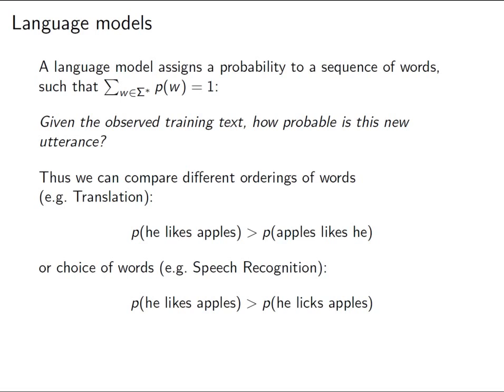The idea behind language modelling is very simple. We want to build a probabilistic model that assigns probabilities to utterances. An utterance can be a sentence, or it might be something someone spoke. Basically we want to be able to assign a probability to any utterance — any string in sigma star. If we're careful about the way we build our language model, we should get a nicely defined probability distribution that sums to one.